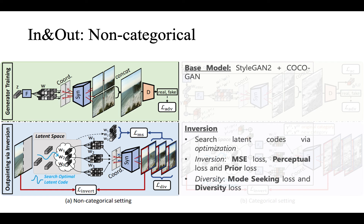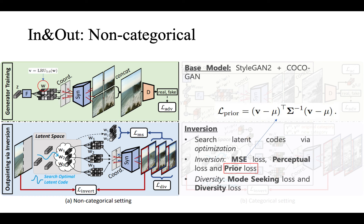The first stage is to train the generator. We adopt a patch-based generator as our backbone. The generator produces patches given different coordinates, and those patches are concatenated to form the final output. The second stage is to explore the latent space of the trained generator to find the latent vectors that can reconstruct the given regions. In addition to the conventional L1 reconstruction loss for GAN inversion, we further adopt prior losses to enforce the inverted vectors to be in the training distribution. The prior losses encourage the mean and covariance of the inverted latent vectors to conform to the training statistics.